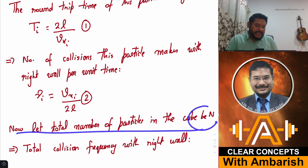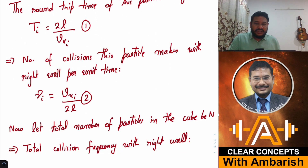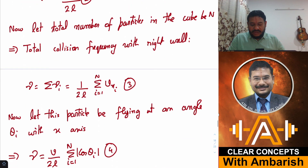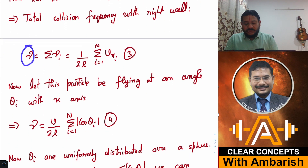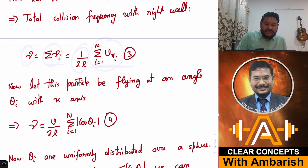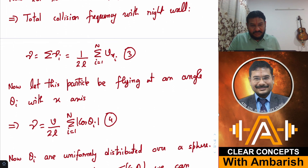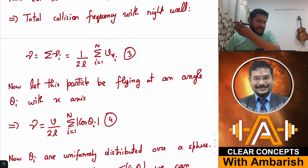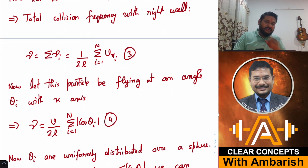If the total number of particles in the cube is N, then the total collision frequency with the right wall is the sum of all individual collision frequencies. So total ν = (1/2L) × Σ v_xi, where v_xi is the x-component of the speed of the i-th particle. Since the speed keeps reversing due to collisions, only the magnitude matters.